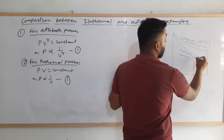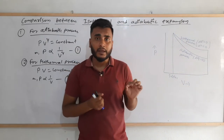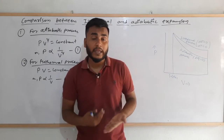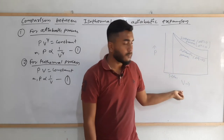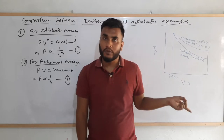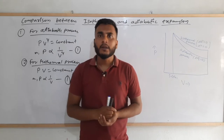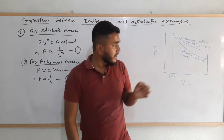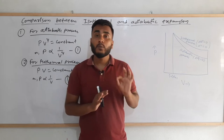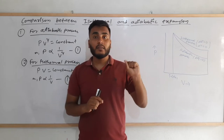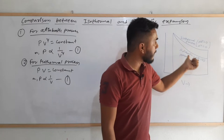For the adiabatic process, the change in heat energy is zero — there is no exchange of heat energy between the system and the surroundings. In isothermal expansion, the change in internal energy is zero and temperature change is also zero. In adiabatic expansion, temperature does change, but heat exchange with the surroundings is zero. We can see that the adiabatic curve is steeper than the isothermal curve.